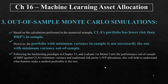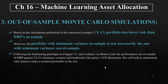Passing to the out-of-sample Monte Carlo simulations. Based on the calculations performed in the previous part that was not covered, the results show that CLA's portfolio has lower risk than HRP in-sample. The difference between in-sample and out-of-sample simulation is that in-sample observations are on the data sample already being used, while out-of-sample observations are introduced from data not part of that sample. However, the portfolio with minimum variance in-sample is not necessarily the one with minimum variance out of sample. In this section, we follow the backtesting paradigm from Chapter 13 and evaluate via Monte Carlo the out-of-sample performance of HRP against CLA's minimum variance and traditional risk parity's IVP allocations.